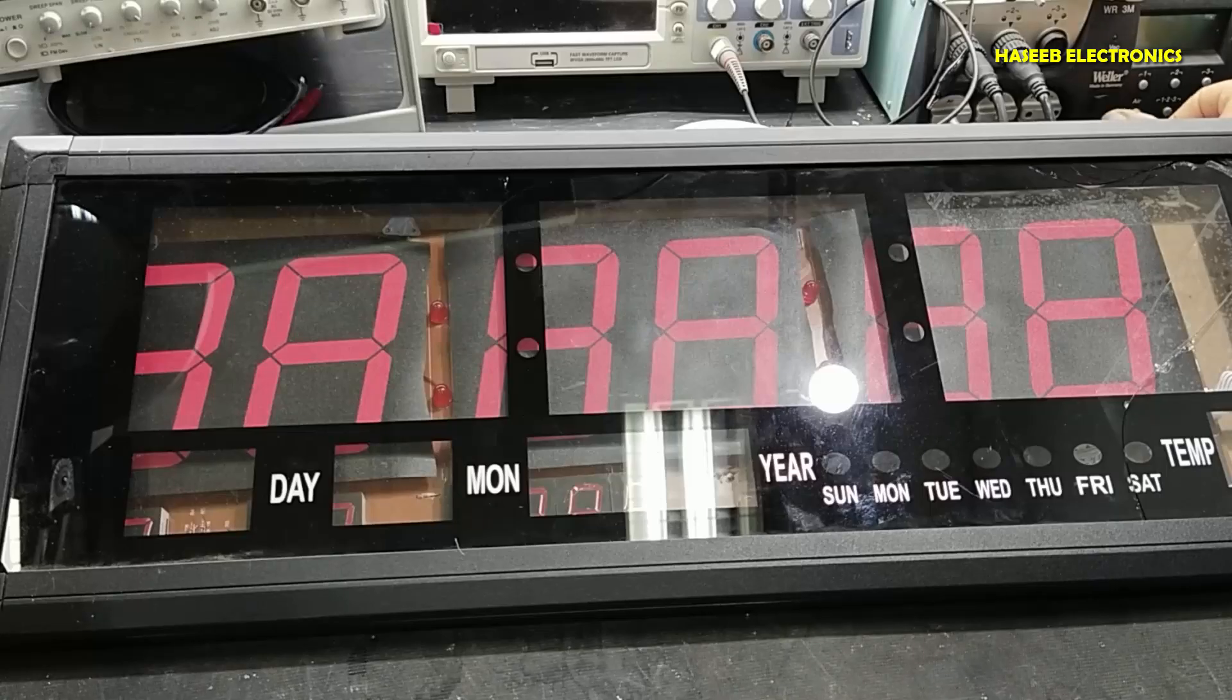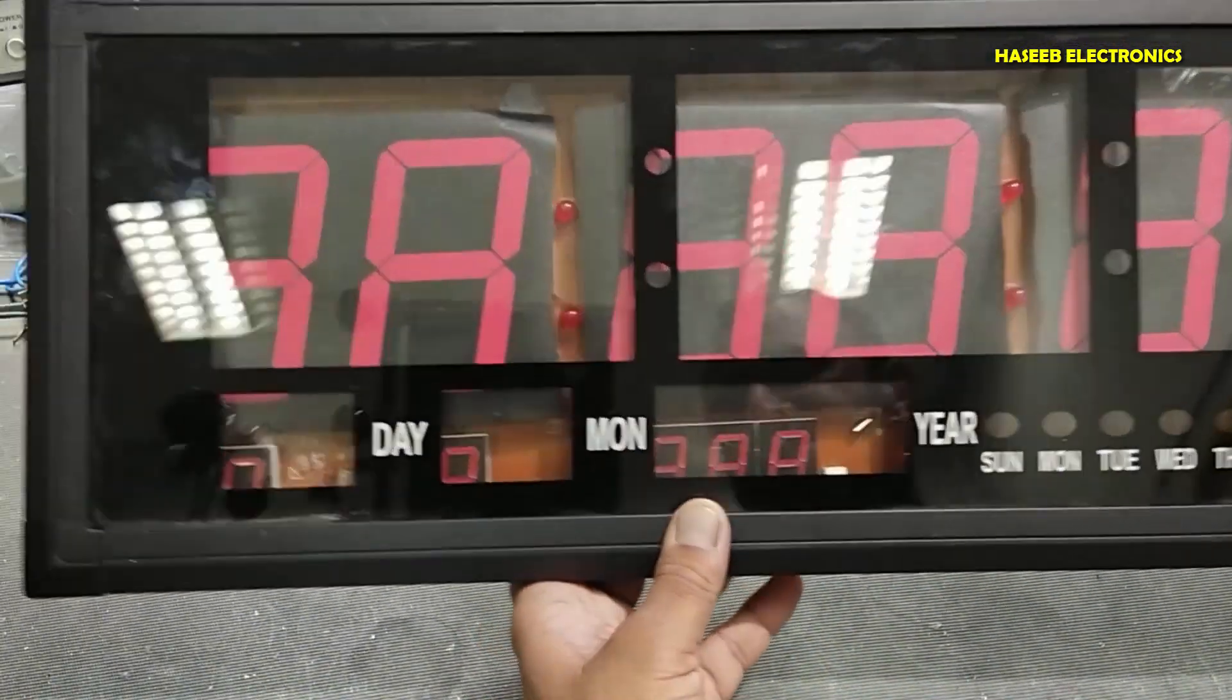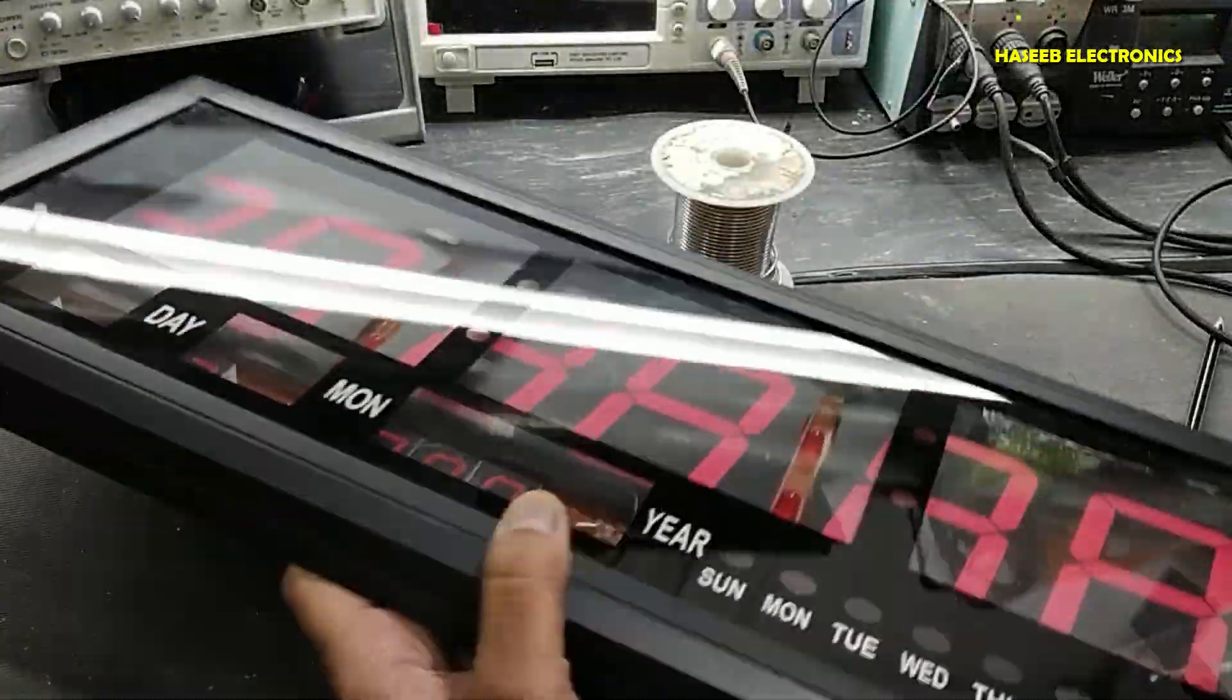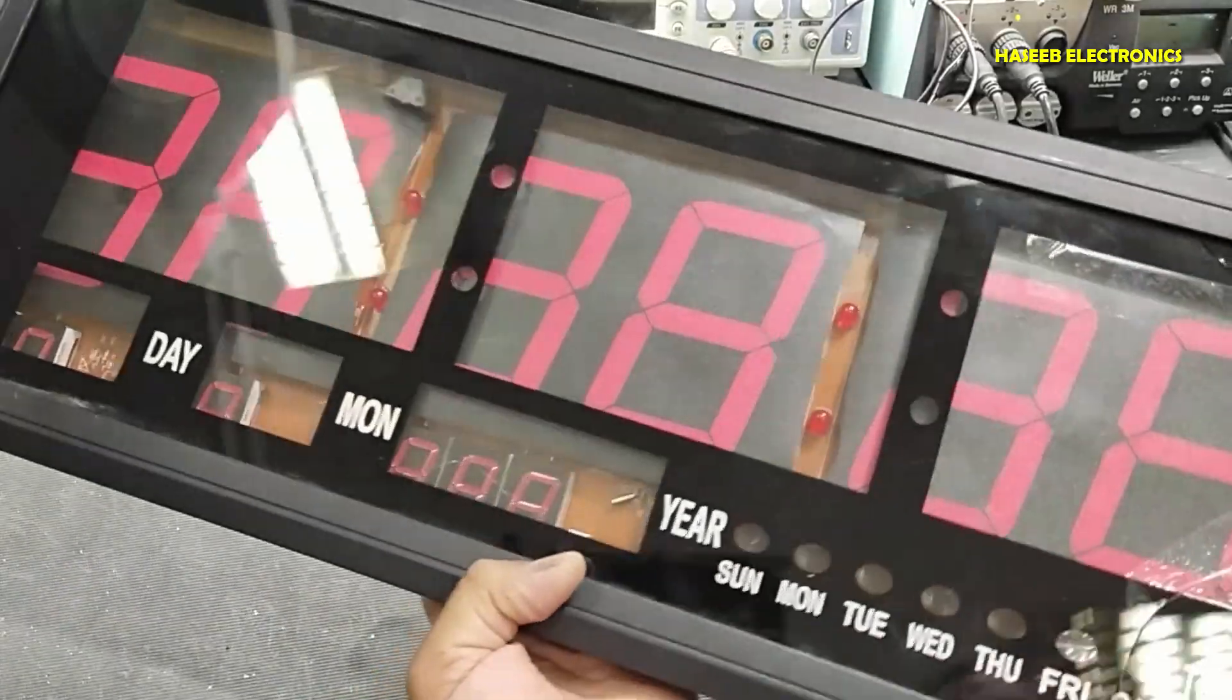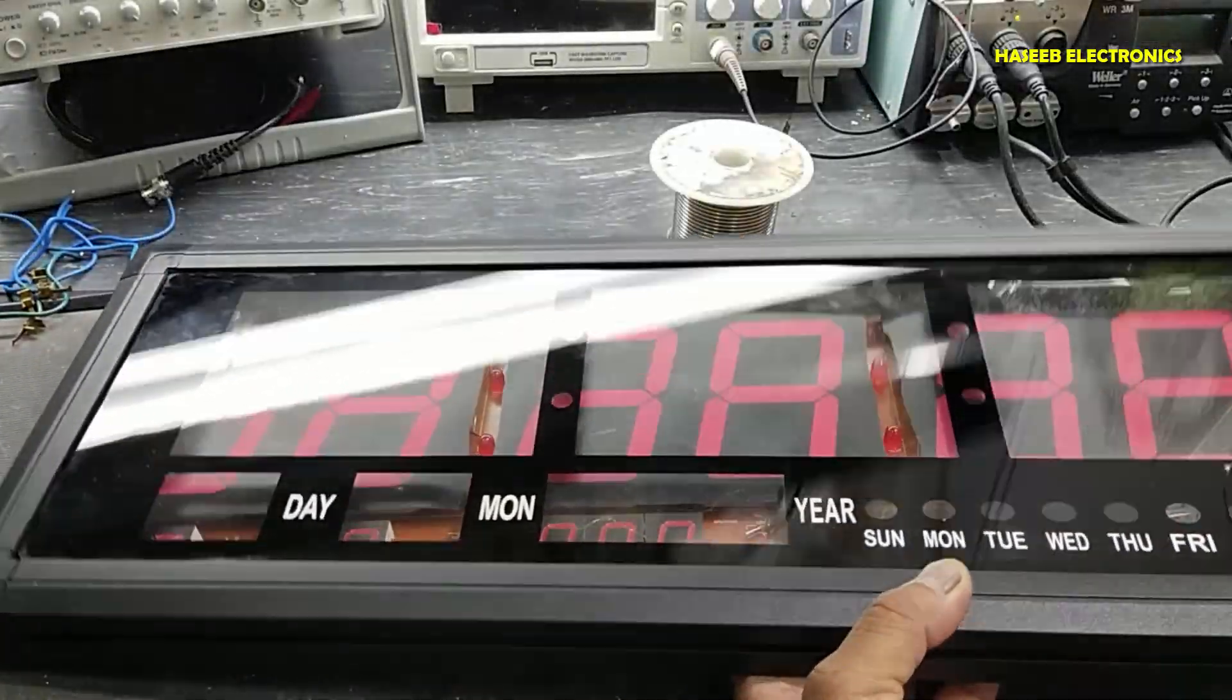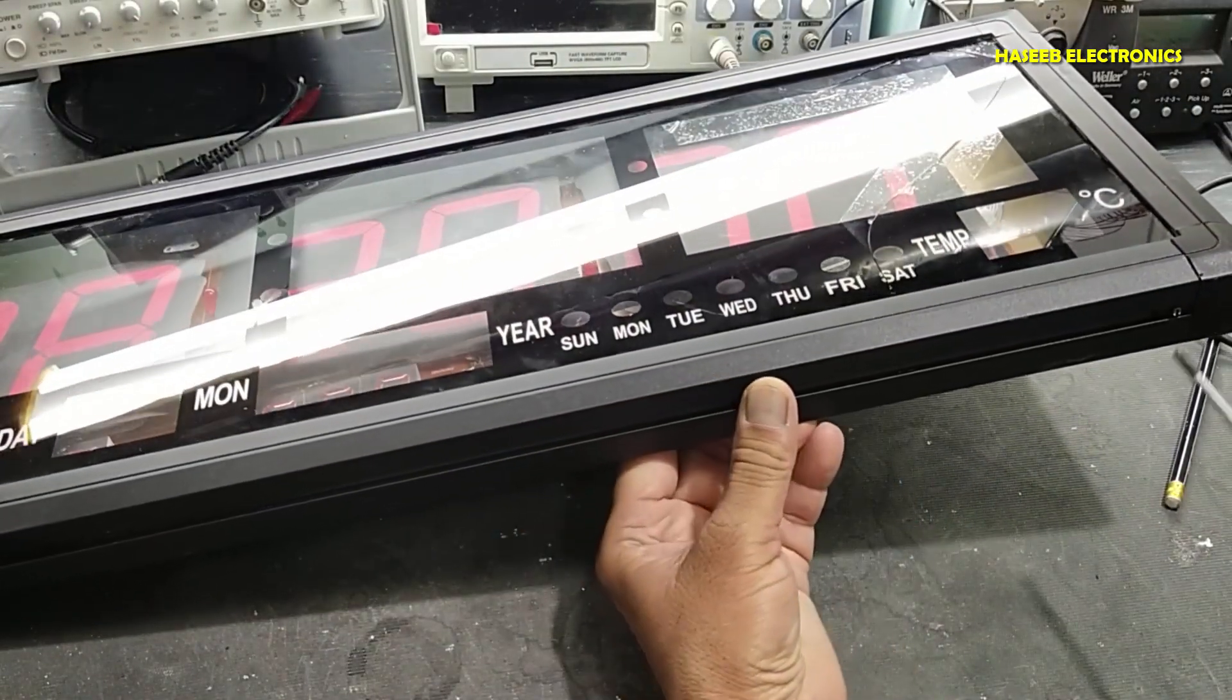Welcome back to my channel. In this session I have this clock - it is damaged, it is not working, and its internal digits are displaced. Let's see it. It is not powering on. To open it we have screws to remove.